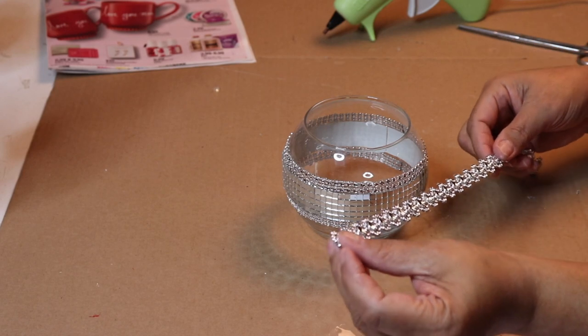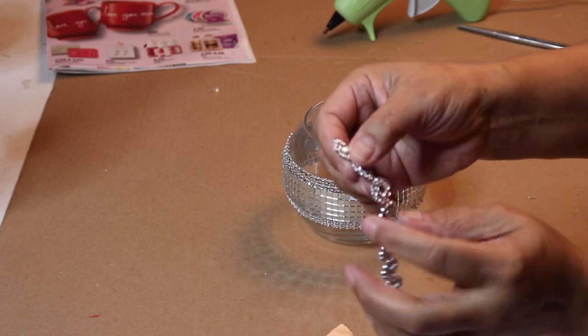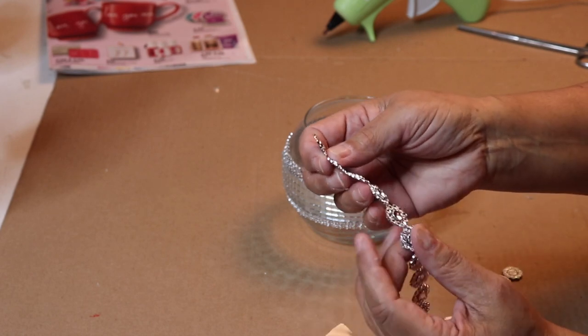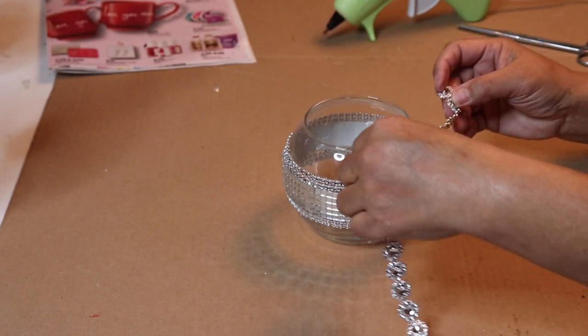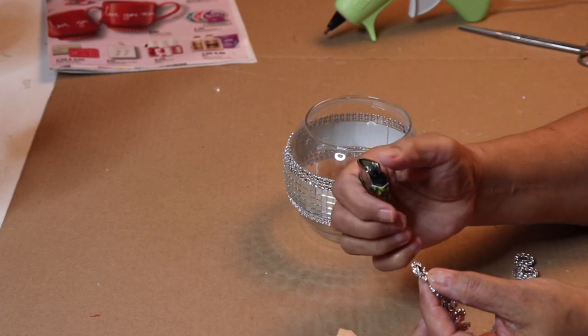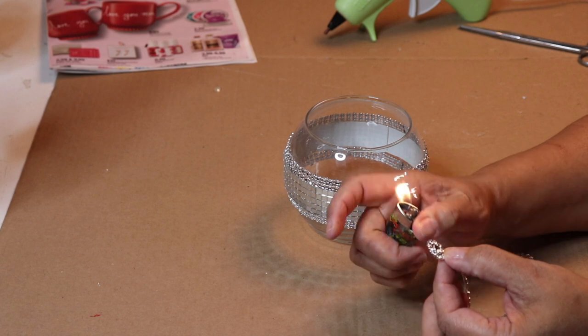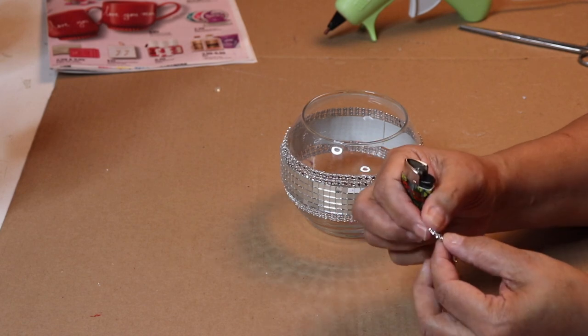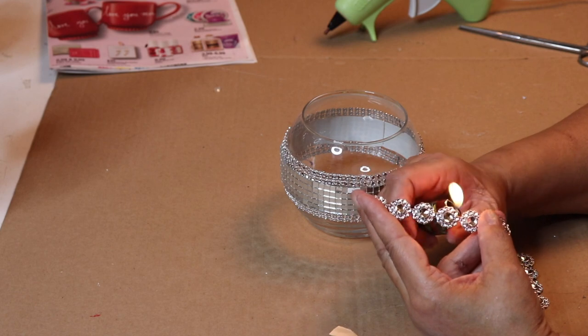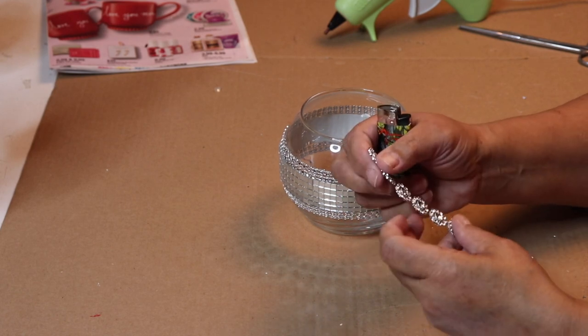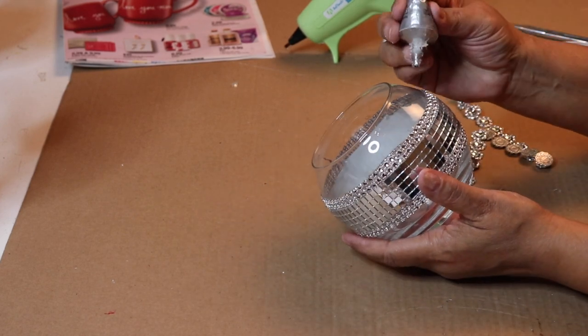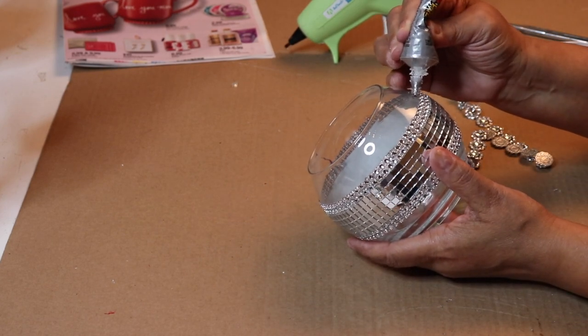I already cut one row of the flower bling, and when you cut it you'll notice those little threads. If they bother you, take a cigarette lighter and just burn them off. That's exactly what I'm doing here. It's really easy to do, just quickly run the flame over the threads. I'll be using some hot glue along with some Gorilla Glue to attach my flower bling to the bowl.